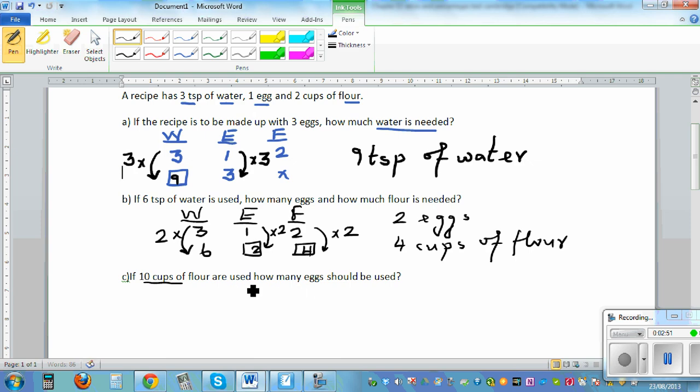Let's look at one more question. 10 cups of flour are used. How many eggs should be used? So let's do water, egg, flour. So we know this is the ratio of 3 is to 1 is to 2. And flour is 10. So how many eggs? So we don't want to find this. We only want to find this.